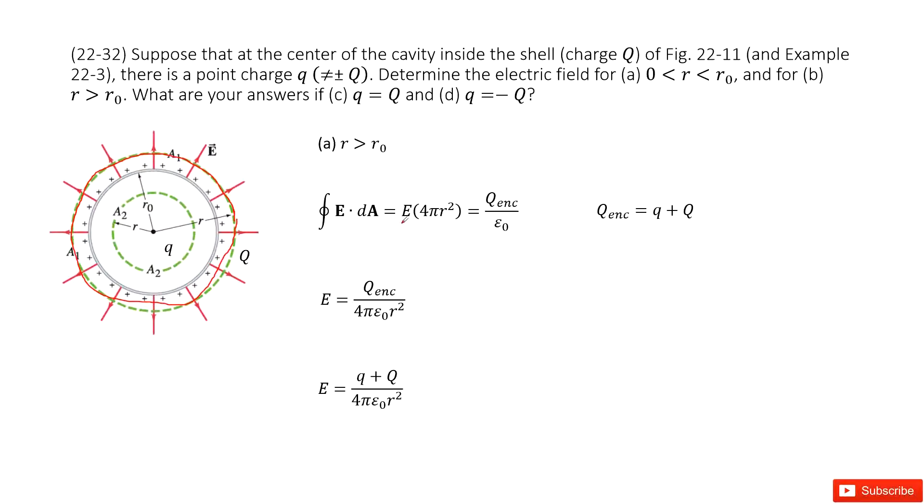Electric field times Gaussian surface area equals enclosed charge divided by epsilon naught. What is the enclosed charge in this Gaussian surface? First is the point charge q, and then the charge Q on the surface. So we have small q plus capital Q, and we replace the enclosed charge as q plus Q.